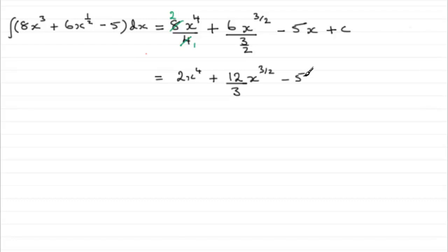Then we've got minus 5x. That obviously doesn't need to be changed, and that constant of integration. So if we clean this up further, we've got 12 thirds here which cancels to 4 whole ones. So we could write this now as 2x to the power 4 plus 4x to the power 3 over 2 minus 5x plus c. And that's essentially it. They'll be quite happy to accept that answer.